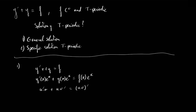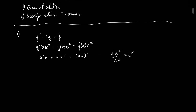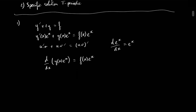As you may know, if you differentiate the exponential function, you end up having the exponential function again. This means that this equation is equivalent to d/dx of y times exponential of x, equal to f of x times exponential of x. By integrating both sides, we can write that y times exponential of x equals the integral from 0 to x of f of t times exponential of t dt, plus a constant of integration a.